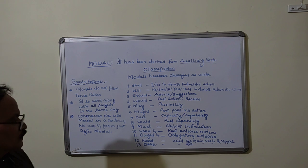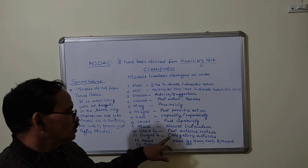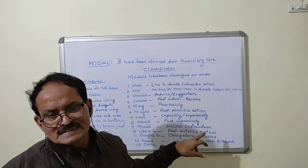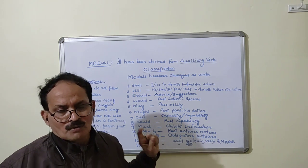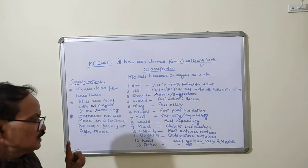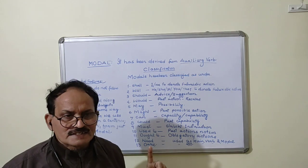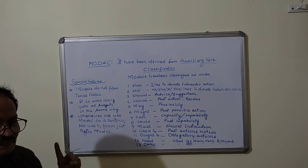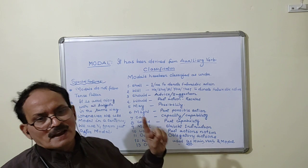Ought to is used to denote obligatory or moral actions taken by the subject. For example, if I say you ought to respect your elders. Means it is under moral obligation that you must respect your elders.